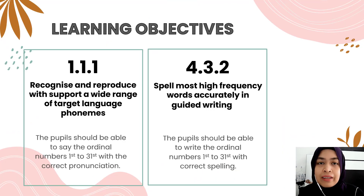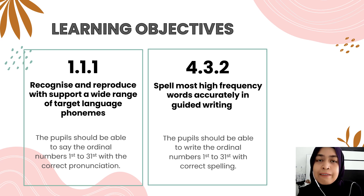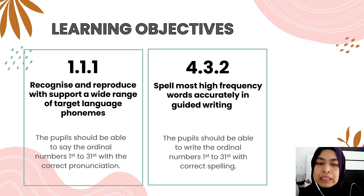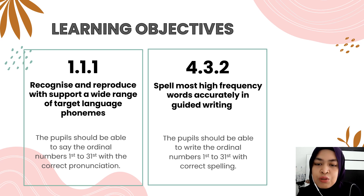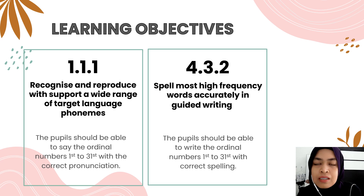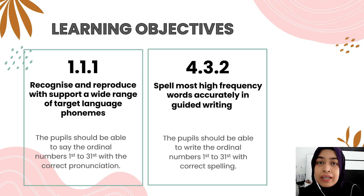Alright, there are two learning objectives for today's lesson. First, you should be able to say the ordinal numbers 1st to 31st with the correct pronunciation. And you should be able to write the ordinal numbers 1st to 31st with the correct spelling.